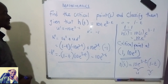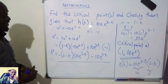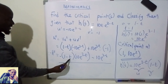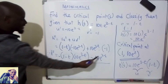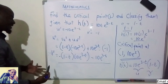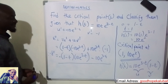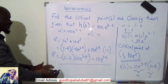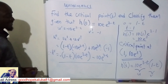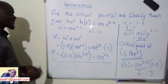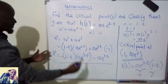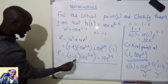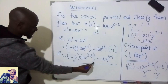This is our second derivative. To classify the critical point, we substitute t=1 into the second derivative. If we get a negative result, the critical point is a maximum; if positive, it is a minimum; if zero, it is a saddle point. This process is called the second derivative test. Substituting t=1: the term (1-1) becomes 0, so the first part vanishes.